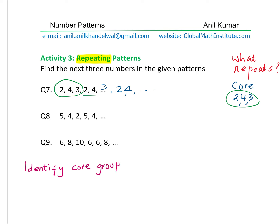Question number 8: 5, 4, 2, 5, 4. We see that again it starts with 5 and then 4, as we have seen. This is the group which is repeating — the core group is 5, 4, 2. We have identified the group, and now we can write the next 3 terms: 2, 5, 4. So like this it has to repeat.